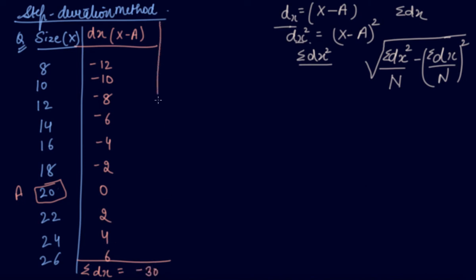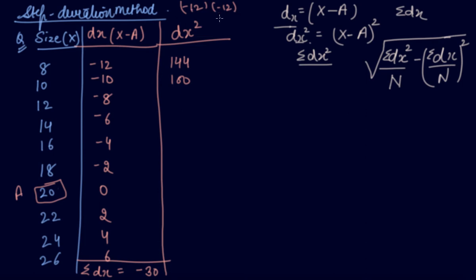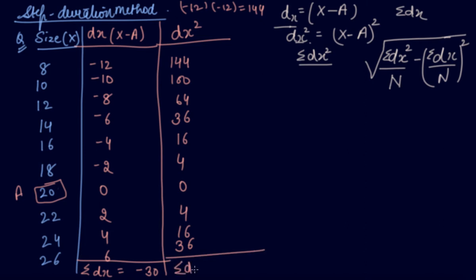Now we find the square of each deviation: 12² = 144, 10² = 100, 12² = 144, 8² = 64, 6² = 36, 4² = 16, 2² = 4, 0² = 0, 2² = 4, 4² = 16, 6² = 36. Adding all these, the summation dx² equals 420.